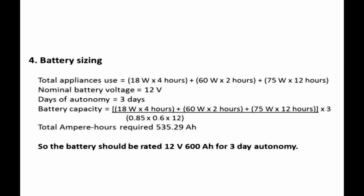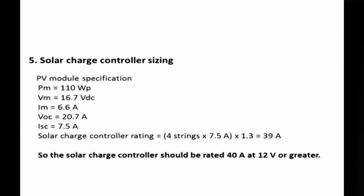Step 4: Battery sizing. Total appliance use = (18 W × 4 h) + (60 W × 2 h) + (75 W × 12 h). Nominal battery voltage = 12 V; days of autonomy = 3 days. Battery capacity = [(18 W × 4 h) + (60 W × 2 h) + (75 W × 12 h)] ÷ (0.85 × 0.6 × 12) — total ampere-hours required = 535.29 Ah. So the battery should be rated 12 V, 600 Ah for three-day autonomy. Step 5: Solar charge controller sizing. PV module spec: Pm = 110 Wp, Vm = 16.7 VDC, Im = 6.6 A, Voc = 20.7 V, Isc = 7.5 A. Controller rating = 4 strings × 7.5 A × 1.3 = 39 A. So the solar charge controller should be rated 40 A at 12 V or greater.